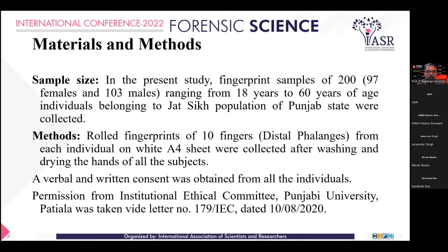Materials and methods. In the present study, a sample size of 200 individuals including 97 females and 103 males, ranging from 18 to 60 years of age from the Jat-Sikh population of Punjab, were collected. Rolled fingerprints of all 10 fingers were taken using black ink on A4 sheet after washing and drying their hands. Verbal and written consent was obtained from all participants. Permission from the institutional ethical committee of Punjabi University Patiala was also taken by letter number 179 IEC in 2020.